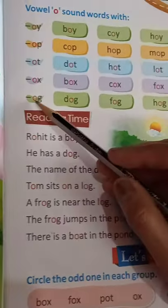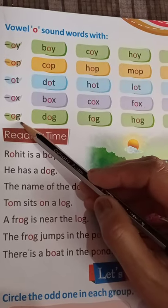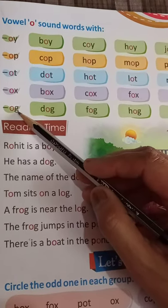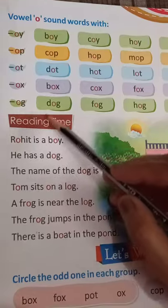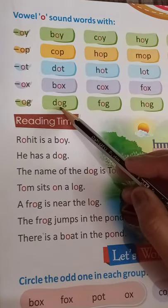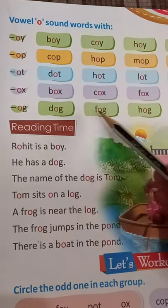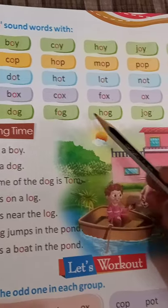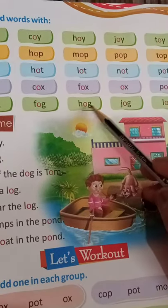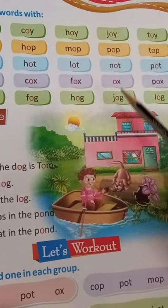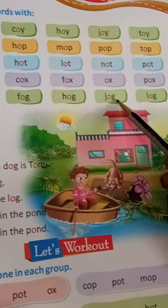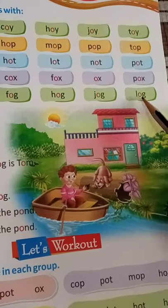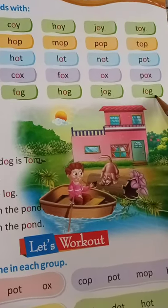Next is O-G. The G sound. So D-O-G — Dog. F-O-G. H-O-G — Hog. J-O-G — Jog. And L-O-G — Log.